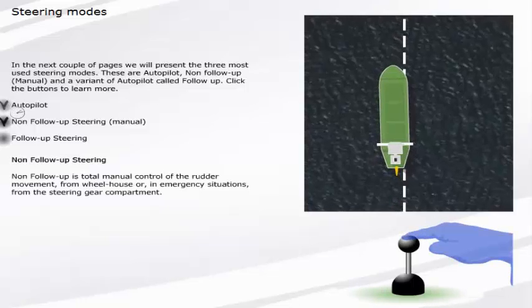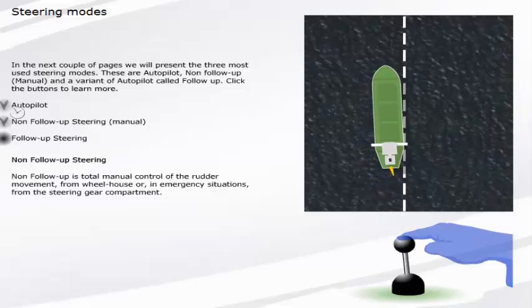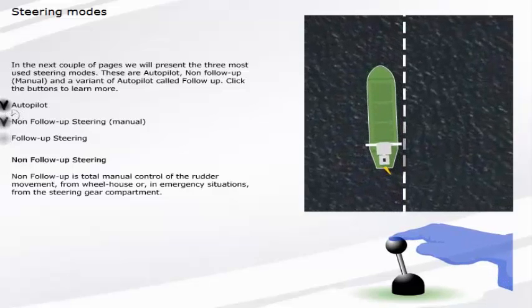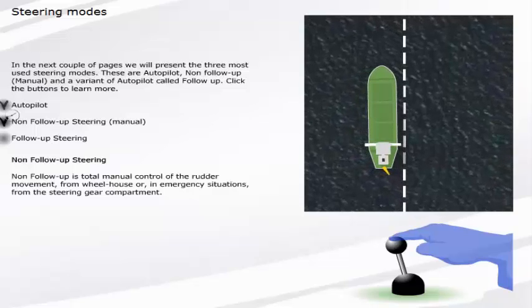Non-follow-up is total manual control of the rudder movement, from wheelhouse or, in emergency situations, from the steering gear compartment.